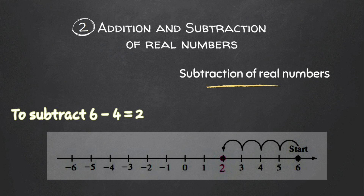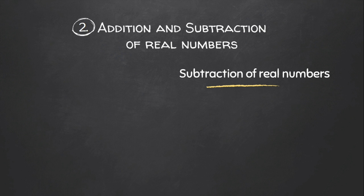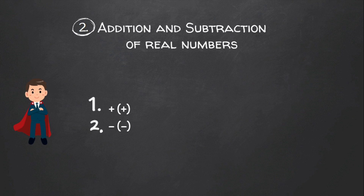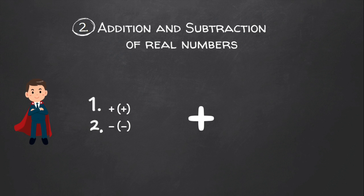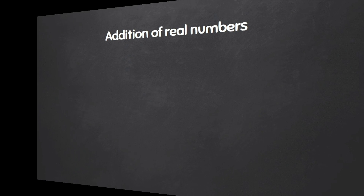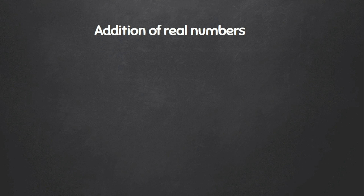Since it is inconvenient to draw a real number line each time, we make some rules. Adding a positive number or subtracting a negative number is addition. Adding a negative number or subtracting a positive number is subtraction. So when we simplify numbers with the same sign, we perform addition.